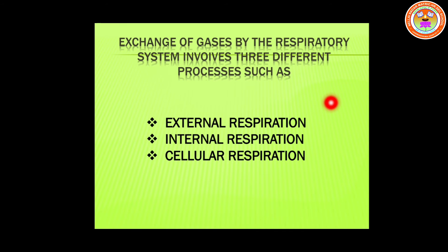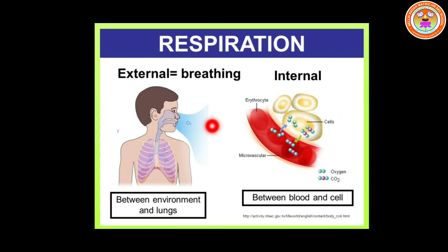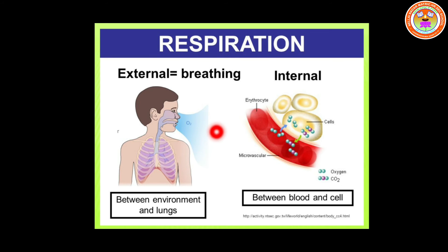Now let us see about the exchange of gases by the respiratory system. The respiratory system involves three different processes: external respiration, internal respiration, and cellular respiration. In external respiration, the intake of oxygen from the air and releasing of carbon dioxide from the lungs occurs through the nostril. This is called breathing. It occurs between the lungs and the environment.